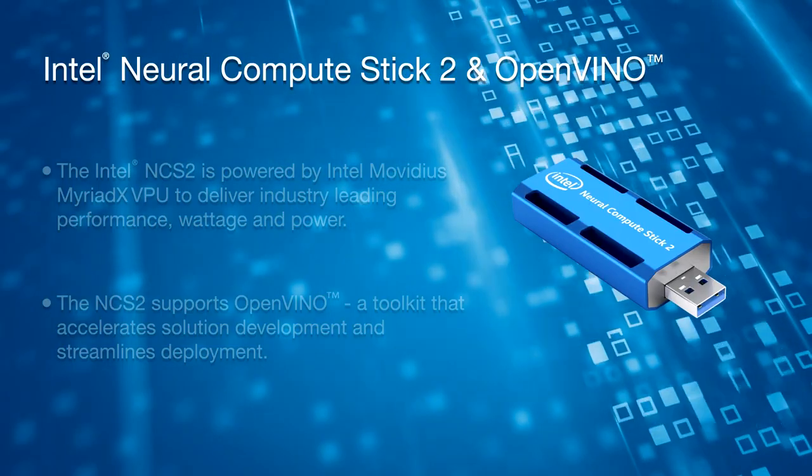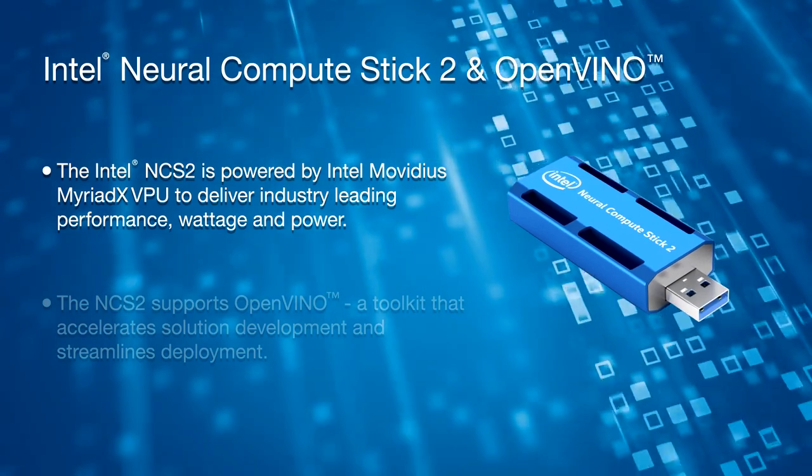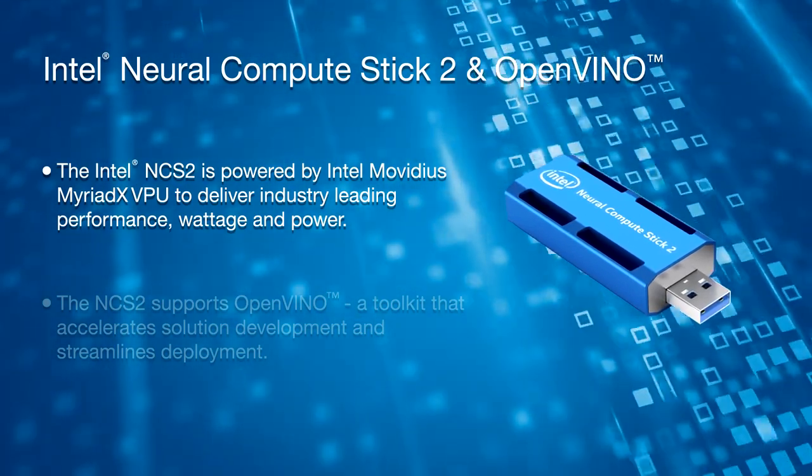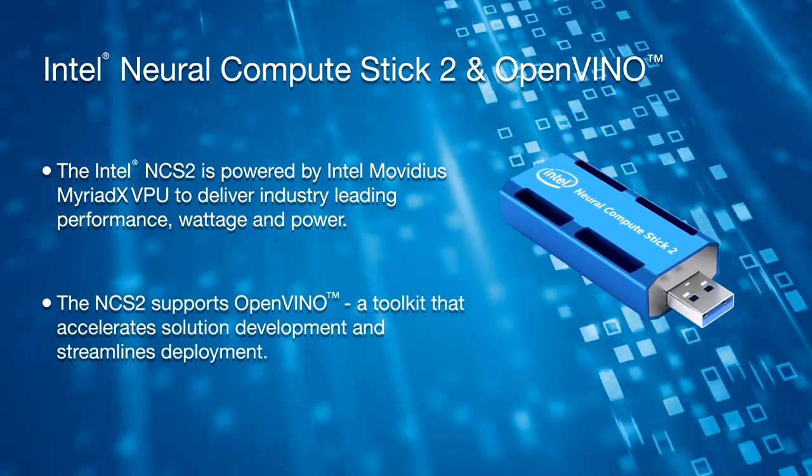Intel makes possible the most amazing experiences of the future. Many may know Intel as the world's largest manufacturer of semiconductors, but they do so much more. Intel invents at the boundaries of technology to make amazing experiences possible for businesses, society, and for every person on earth. Intel's NCS2 is powered by Intel Movidius X VPU to deliver industry-leading performance, wattage, and power. The NCS2 supports OpenVINO, a toolkit that accelerates solution development and streamlines deployment. The Neural Compute Stick 2 offers plug-and-play simplicity, support for common frameworks, and out-of-the-box sample applications. For more information, please see the links provided below.